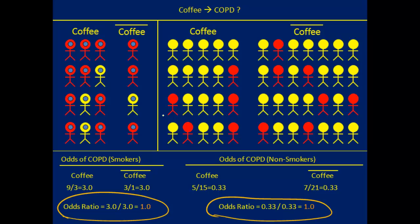But there's nothing that says we would have to find the same association between coffee and COPD in both groups, the smokers and the non-smokers. They could be different. For example, if we increase the number of individuals with COPD in the non-smoker group, we find that among non-smokers who drink coffee, the odds of COPD has increased to 0.82, giving an odds ratio of 2.5. The association between coffee and COPD is of greater magnitude among the non-smokers than among the smokers. Among the smokers, we didn't find any association between coffee and COPD at all.